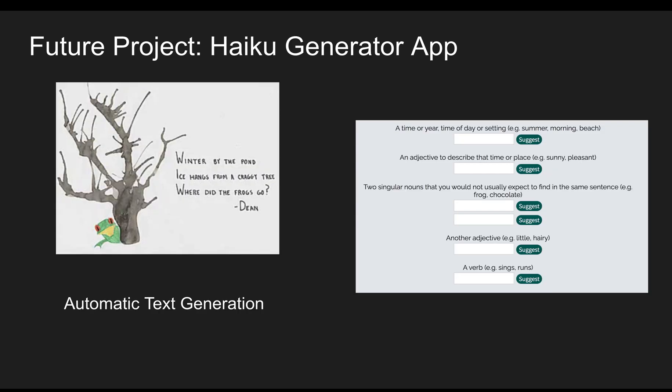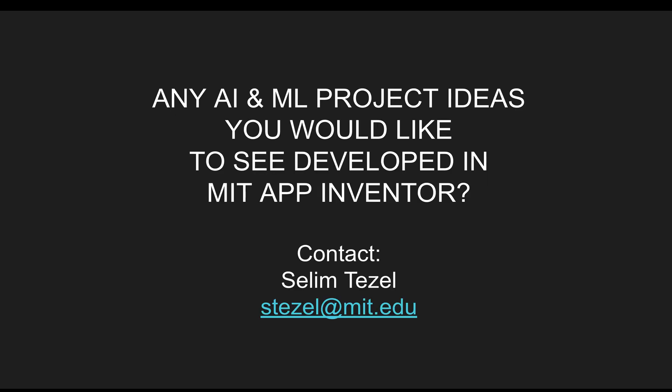Finally, there are efforts around automatic text generation in App Inventor. One tutorial we have in mind is a haiku generator app where you enter some information and interesting haikus are produced. If you have any AI or ML project ideas you'd like to see developed in MIT App Inventor, please contact me at stezel at mit.edu. We'd be delighted to work with you. I hope everybody has a wonderful day. Thank you for your time.